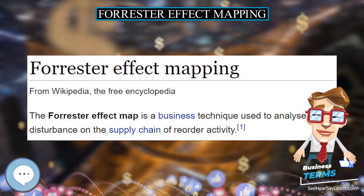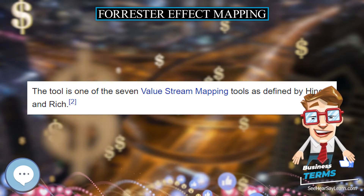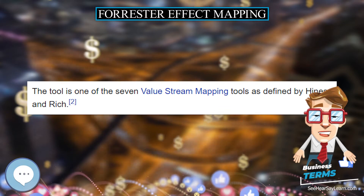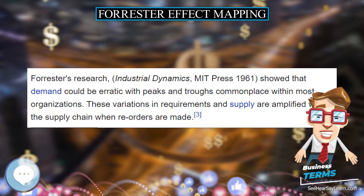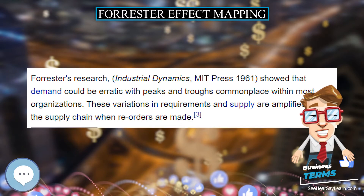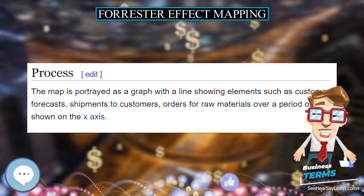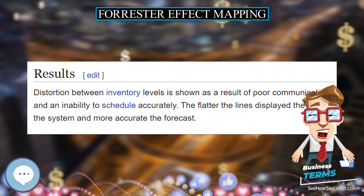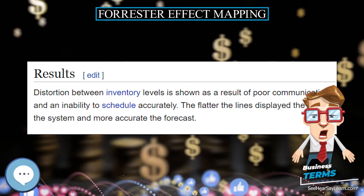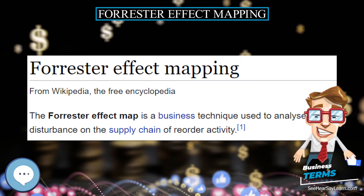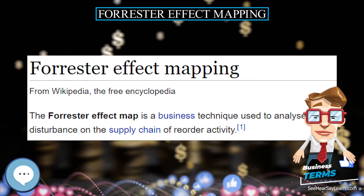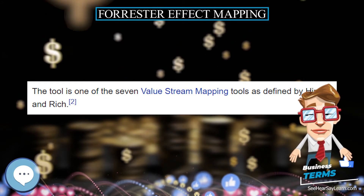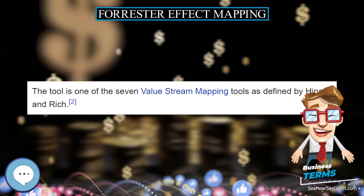Forrester effect mapping. The Forrester effect map is a business technique used to analyze the disturbance on the supply chain of reorder activity. The tool is one of the seven value stream mapping tools as defined by Heinz and Rich. Forrester's research, Industrial Dynamics, MIT Press 1961, showed that demand could be erratic with peaks and troughs commonplace within most organizations. These variations in requirements and supply are amplified within the supply chain when reorders are made.